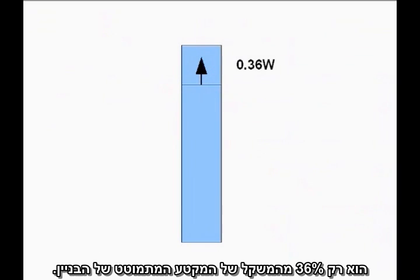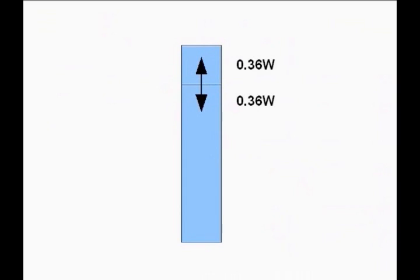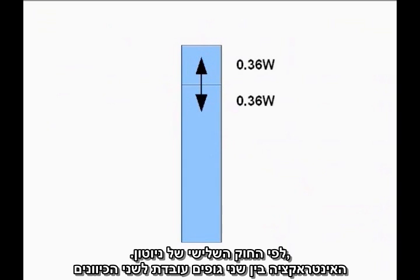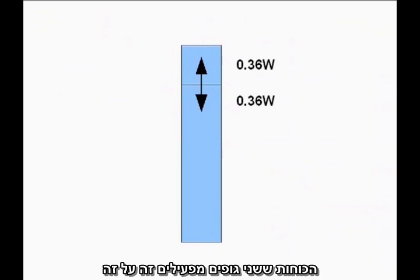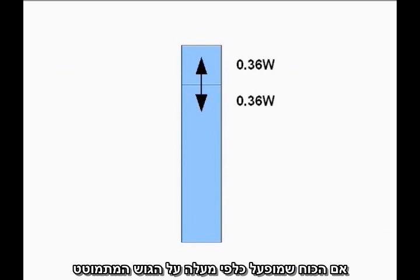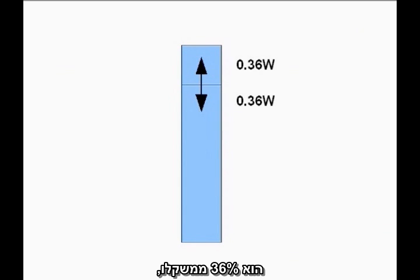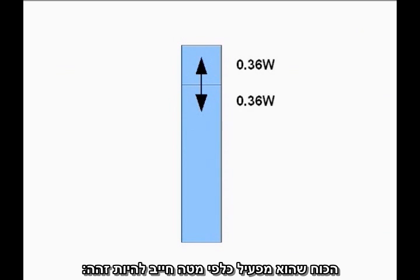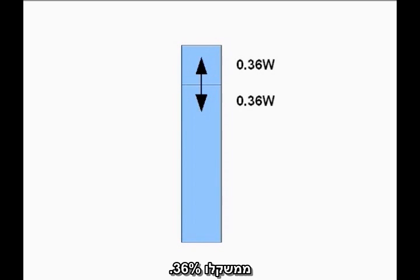So far, so good. But now turn it around. Newton's Third Law says interactions between objects work both ways. The forces two objects exert on each other are always equal and opposite. If the upward force acting on the falling block is 36 percent of the weight of the falling block, the downward force exerted by the falling block must be exactly the same, 36 percent of the weight of the falling block.